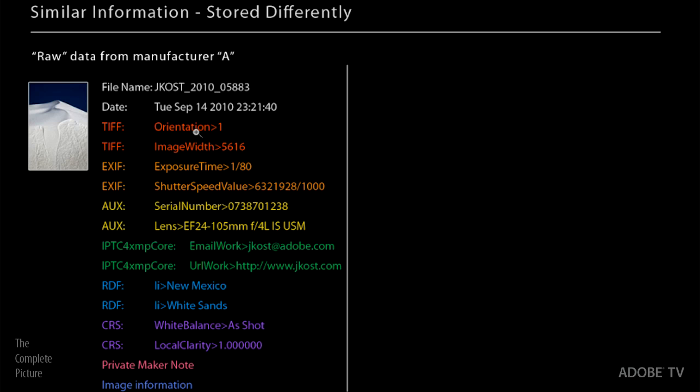And it doesn't matter who it's from. But you can see that it's got information like the file name and the date. And then it's got the image orientation and the image width, which are TIFF properties. And then it's got some EXIF information and even some keywords down here and some camera raw settings. It's even got a private maker note right here, which means, really, if there's something that a camera manufacturer wants to encrypt, that they don't want to share with anyone else, they can put it right there.